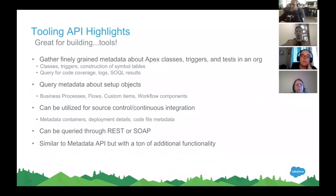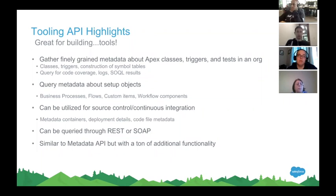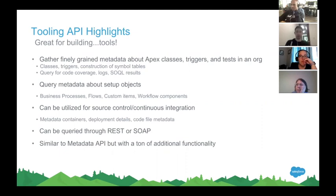Some highlights of the Tooling API: it's used to build tools. I can query all the metadata in my org — SObjects, Apex classes, Apex triggers, and tests. I can go down to the level of what variables are in a specific class, and where those variables are used. I can get information on business processes, flows, custom items, and workflow components. I can create and check metadata containers to check on deployments in real time. I can query using either SOAP or REST. Some of you may be familiar with the Metadata API — the Tooling API was built as Metadata API++, with a lot of the same functionality plus additional capabilities you don't get with the Metadata API.